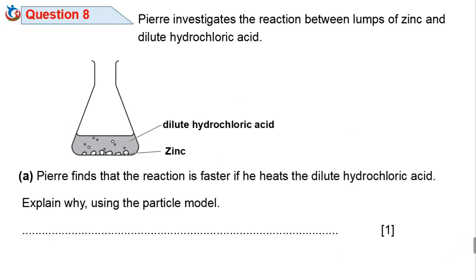Question 8. Pierre investigates the reaction between lumps of zinc and dilute hydrochloric acid. The conical flask contains hydrochloric acid and zinc granules. Pierre finds that the reaction is faster if he heats the dilute hydrochloric acid. Explain why using the particle model.